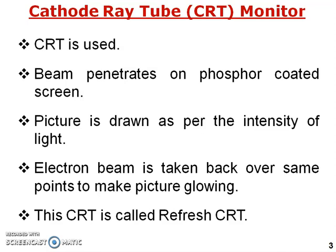CRT technology uses a beam penetration process. A beam penetrates the phosphorus-coated dots — the screen is coated with a phosphorus layer — and the picture is drawn as per the intensity of the light. Whatever intensity is needed, a beam of that intensity is used to glow the pictures. The electron beam is taken back over some points to make the picture glow.